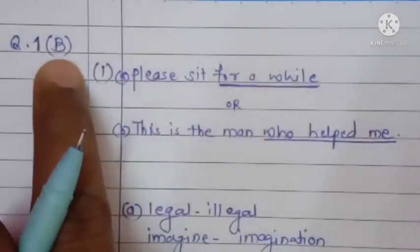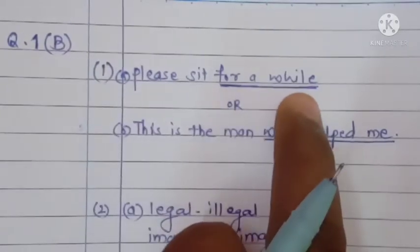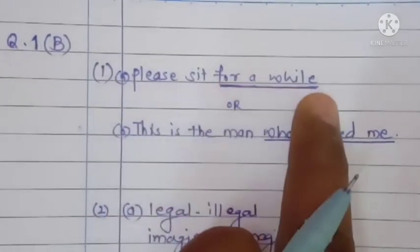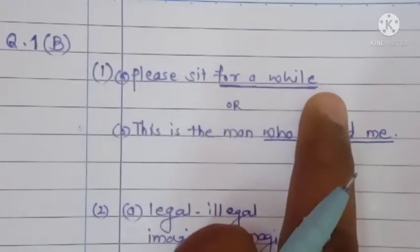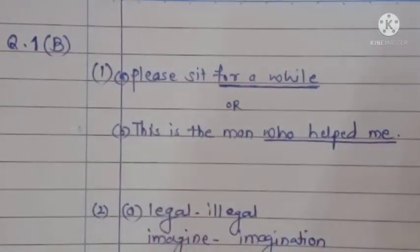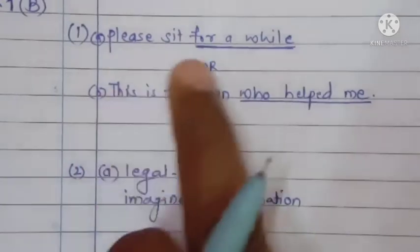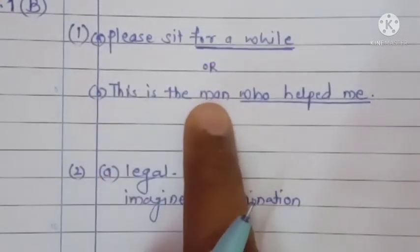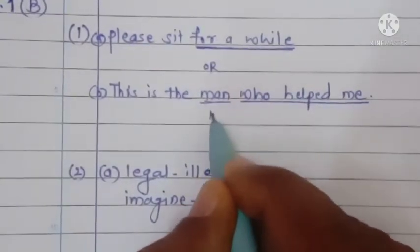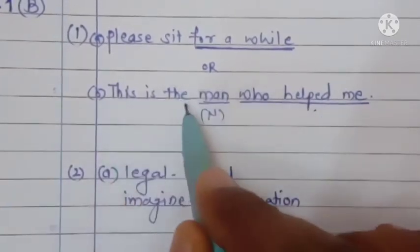For question 1B on a separate page — first activity, option A using 'for a while': you can write simple sentences like 'Please sit for a while', 'Please sit here for a while', 'Please sit down for a while', or 'Please wait for a while'. For option B — 'This is the man' — add a clause like 'who helped me'. Since 'man' is a noun, it gets an adjective clause: 'This is the man who helped me.'